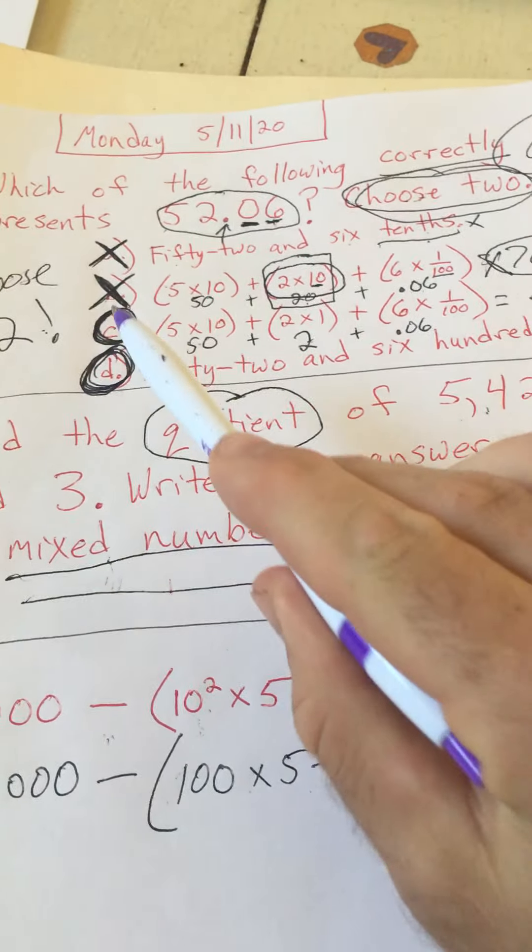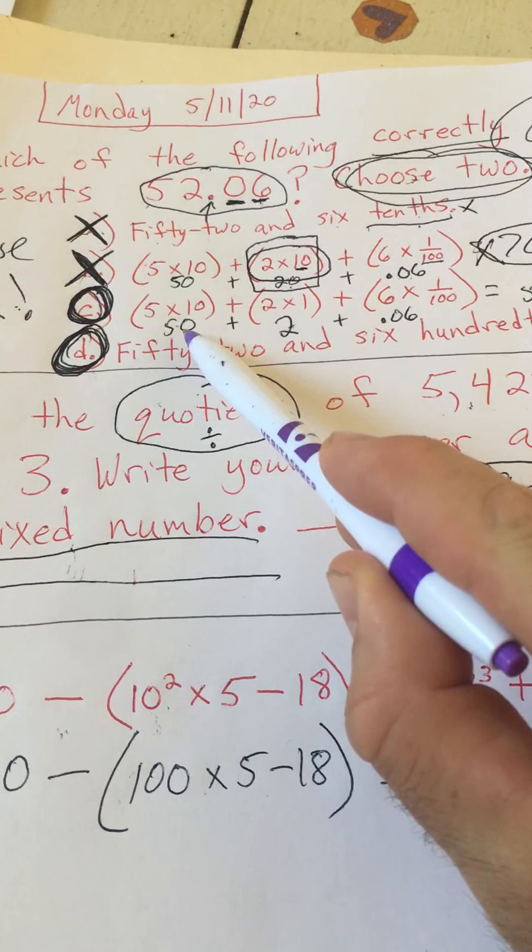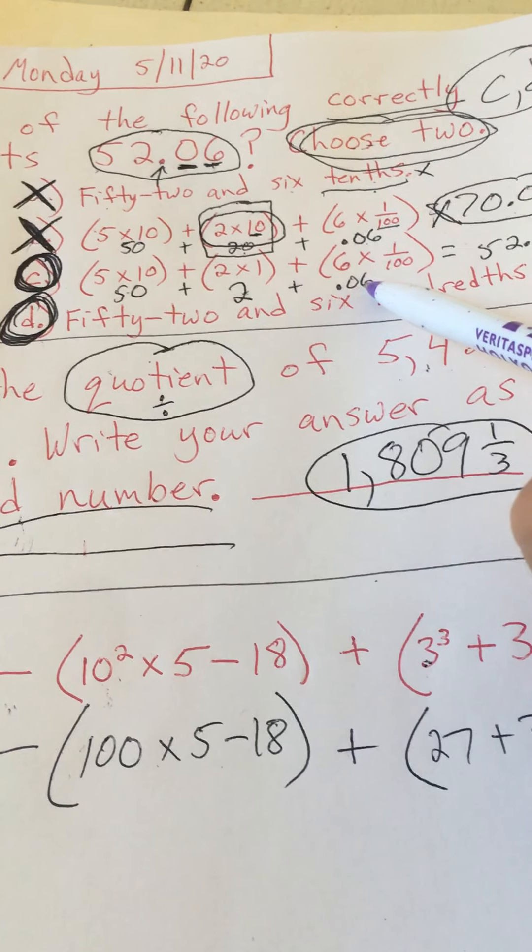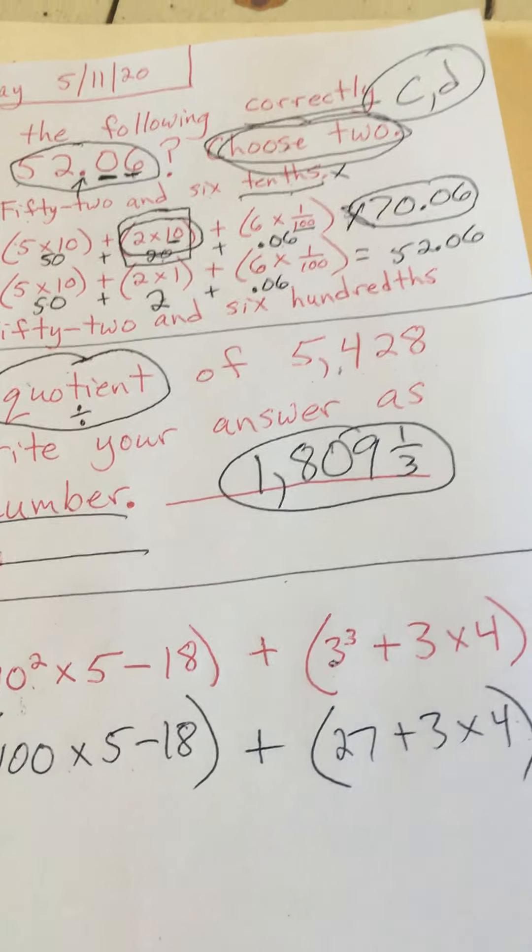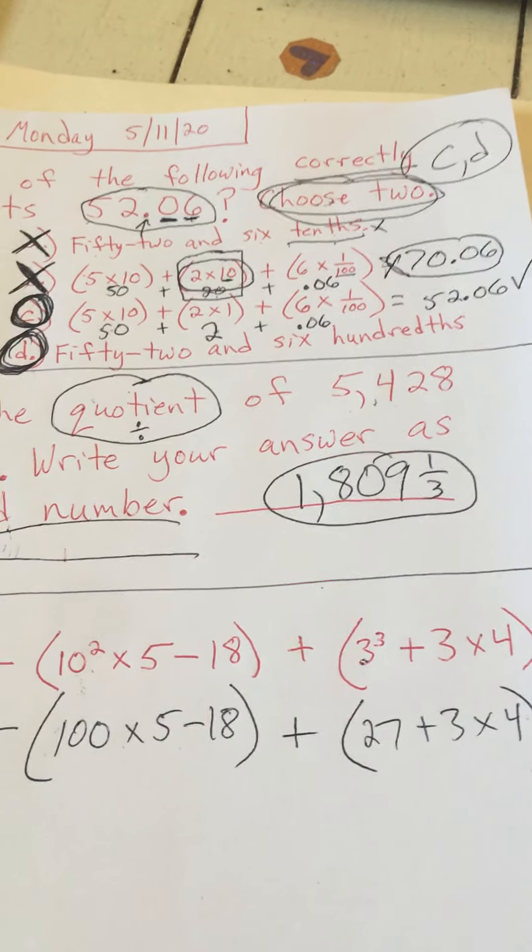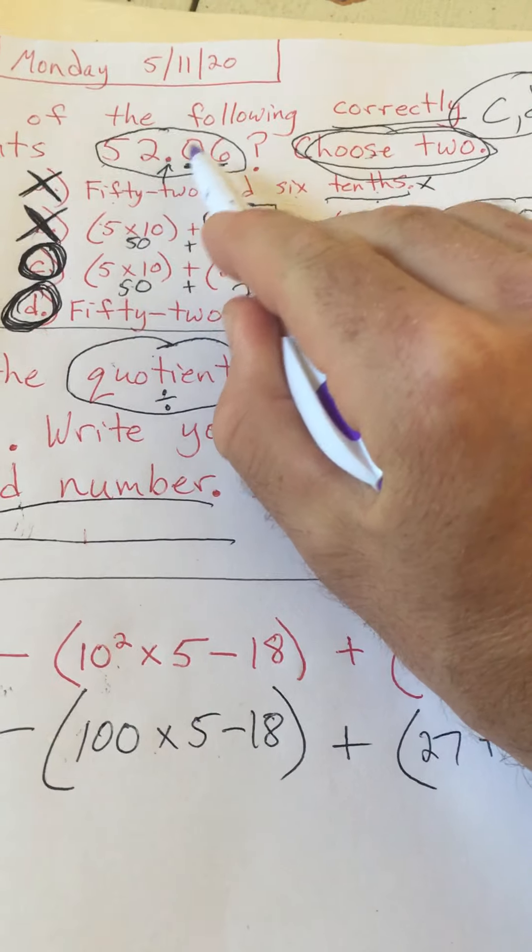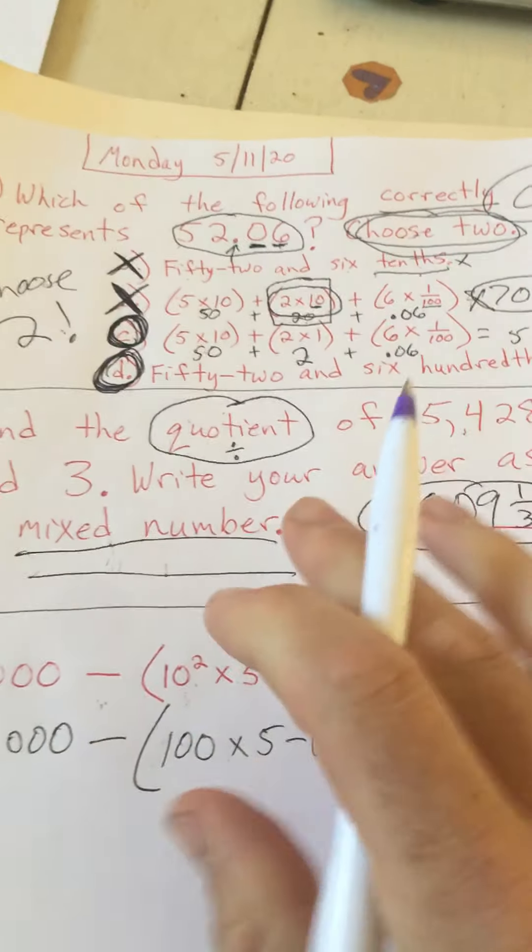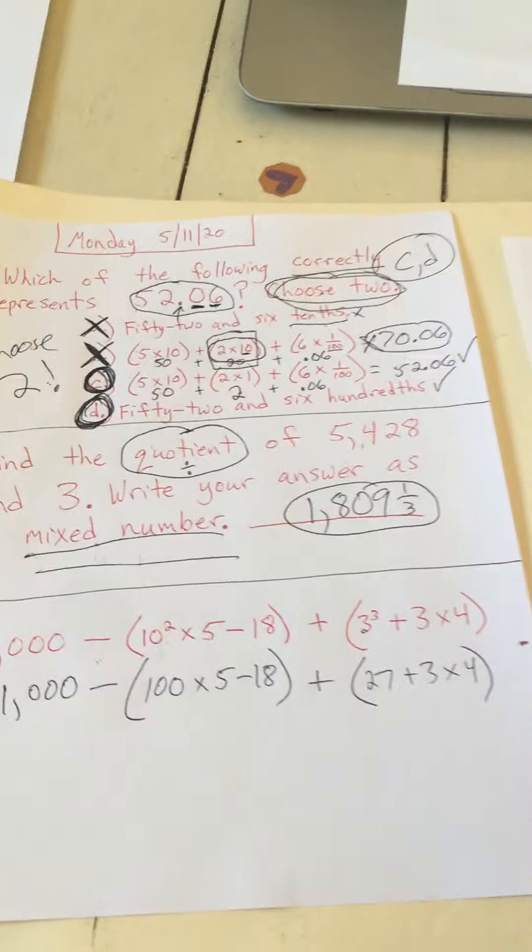It says choose two, but I'm still going to make sure C and D are both right. So 5 times 10 is 50, plus 2 times 1 is 2, plus 6 times 1 one-hundredth is 6 hundredths. 50 plus 2 is 52, plus 6 hundredths is 52.06. So that one is correct. C is the correct option. And then D, 52 and 6 hundredths. 52 and 6 is in the hundredths place. So that is also correct. The answer for one is C and D.